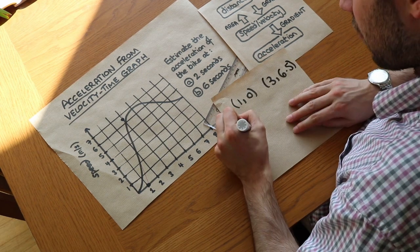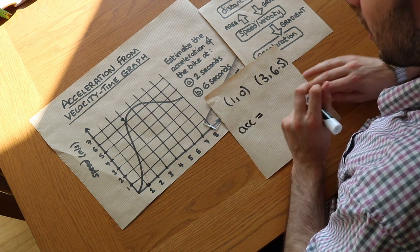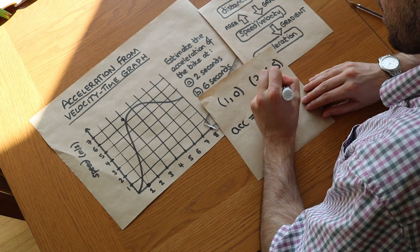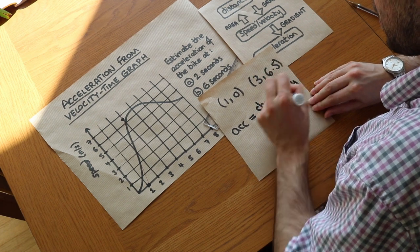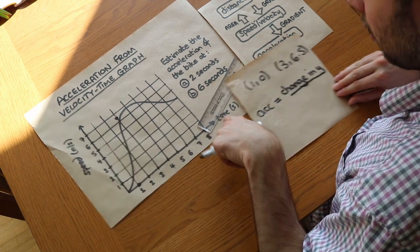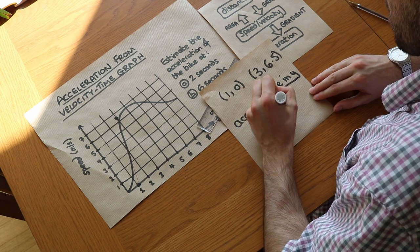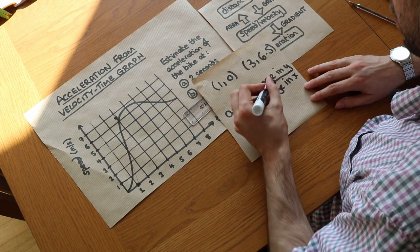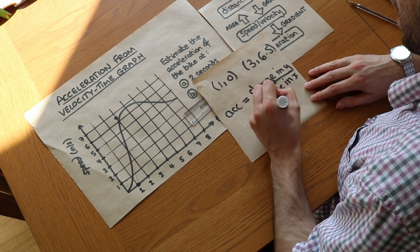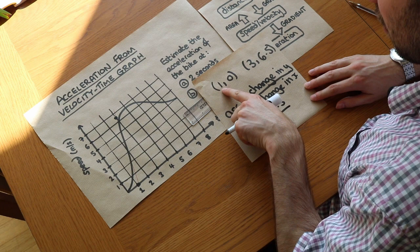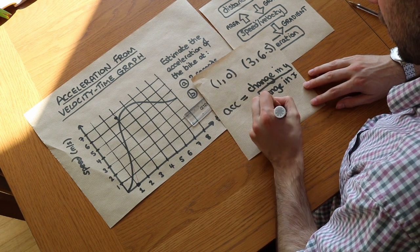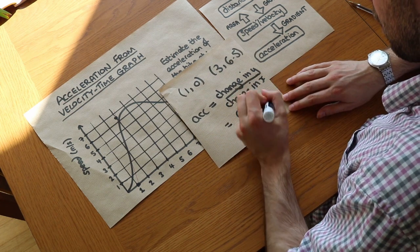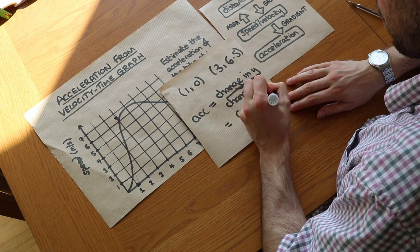Now the acceleration is just the change in y over the change in x. In this particular case, the change in speed over the change in time. So what's the change in y? Well, to get from 0 to 6.5, that's a change of 6.5. And then we divide by the change in x, where we're going from 1 to 3, so that's a change of 2. And then we just do that division, and that gives us 3.75.